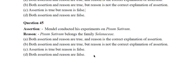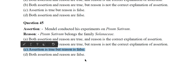Question 45: Assertion — Mendel conducted the experiment on Pisum sativum, that means garden pea. Reason — Pisum sativum belongs to the family Solanaceae. The assertion is true but reason is false, so option C is the correct answer.